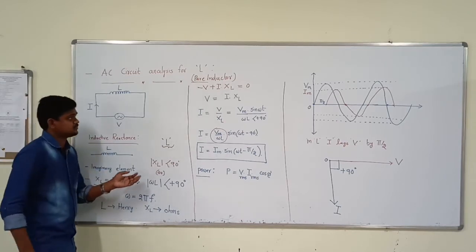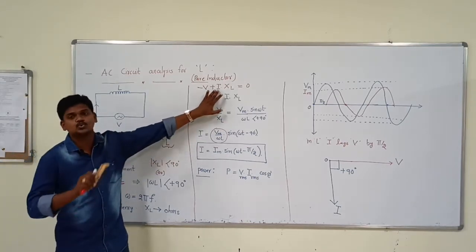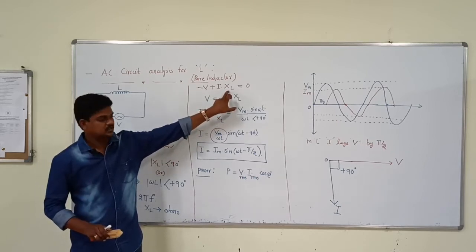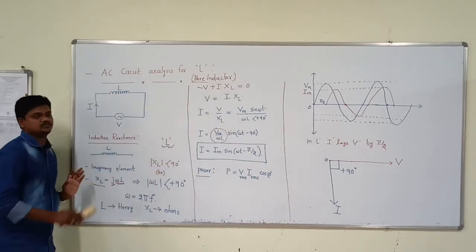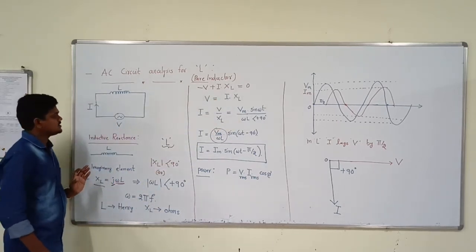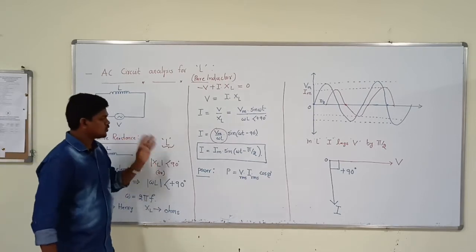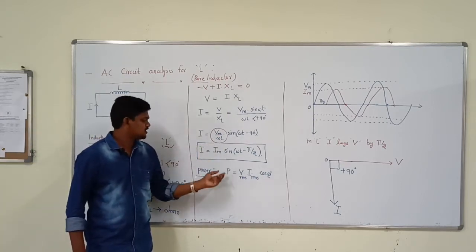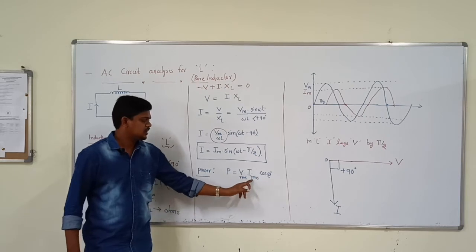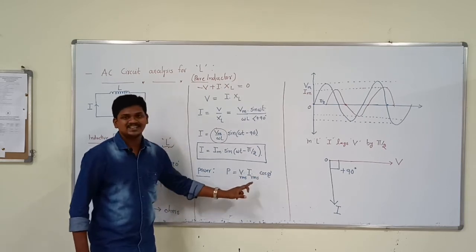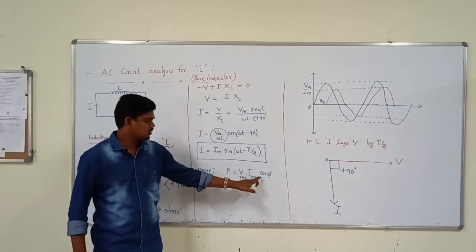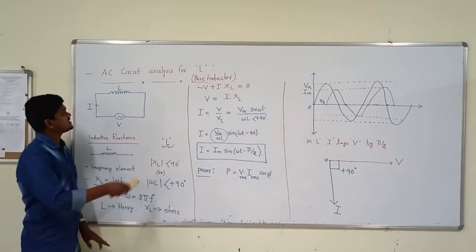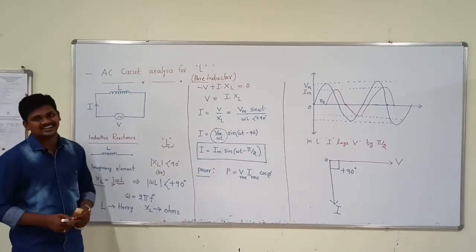So finally, in the inductor, whenever AC supply is given — if it is a pure inductor — the inductor current lags voltage by 90 degrees. You must remember the inductive reactance. Wherever the equation is, please do not write inductor L — just write inductive reactance XL. And we can write the power equation: power is Vrms into Irms into cos phi.